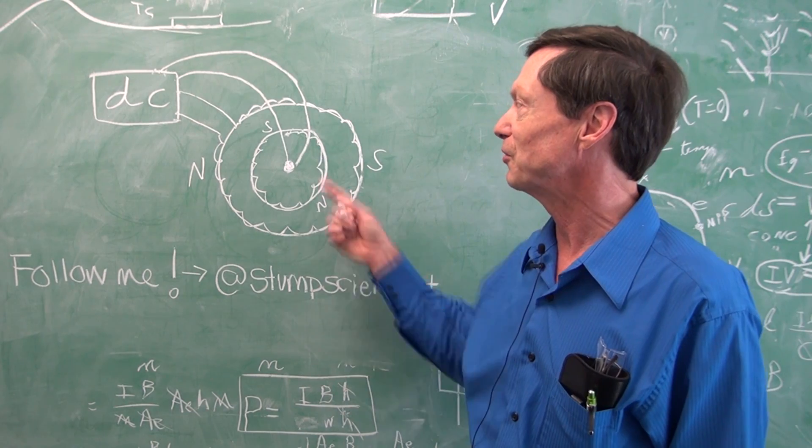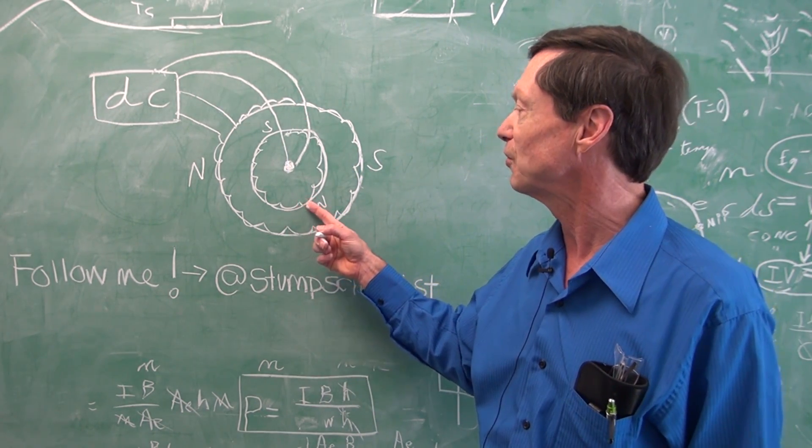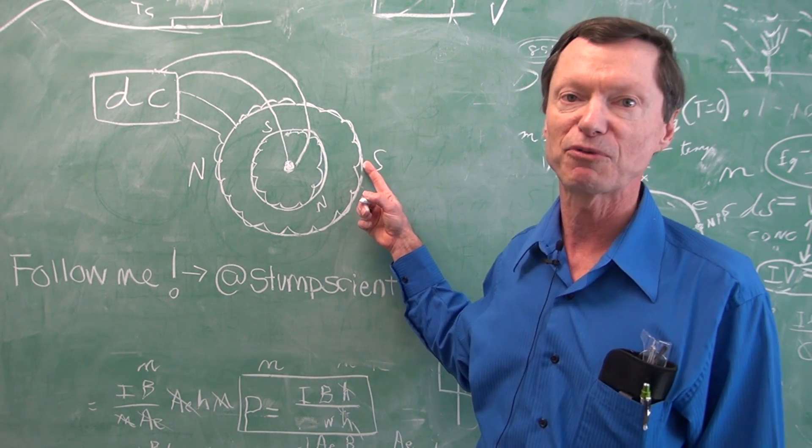Now, we start the motor. We start the current. We see that opposite poles attract. So the rotor will turn to line up the north with the south pole.